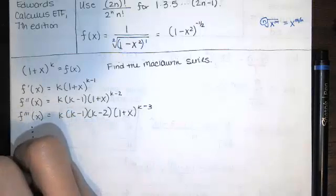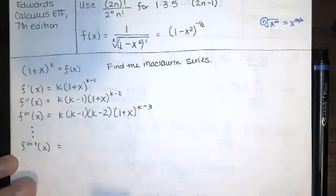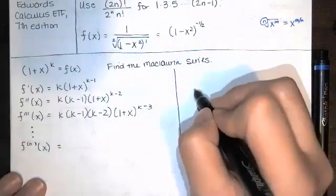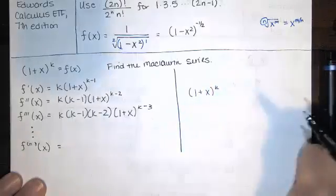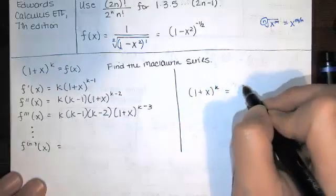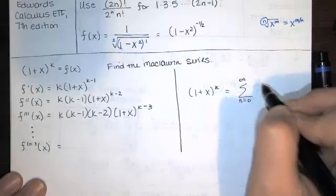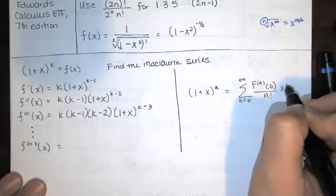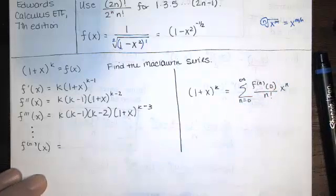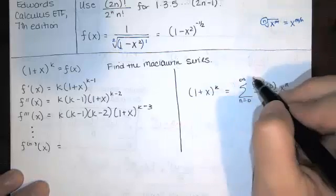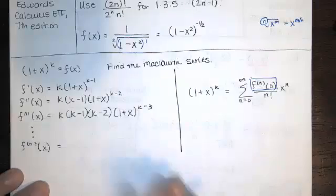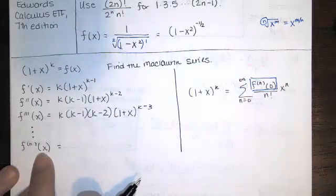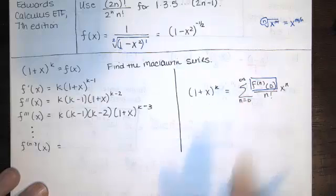If we're looking for a pattern for the nth derivative, what we're trying to do is find the Maclaurin series, which means finding the series of the form: the sum as n goes from 0 to infinity of the nth derivative of f evaluated at x equals 0, over n factorial, times x to the n. The only unknown is that nth derivative of f at 0. So I'm trying to find a pattern for the nth derivative of f, evaluate it at 0, and then substitute in.